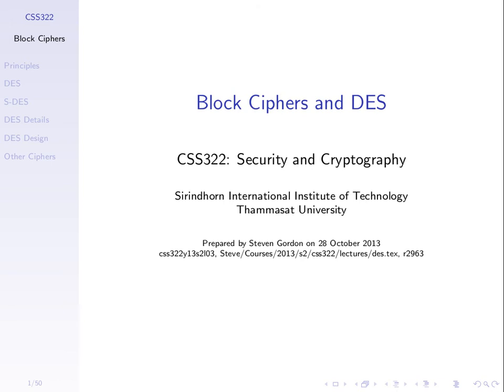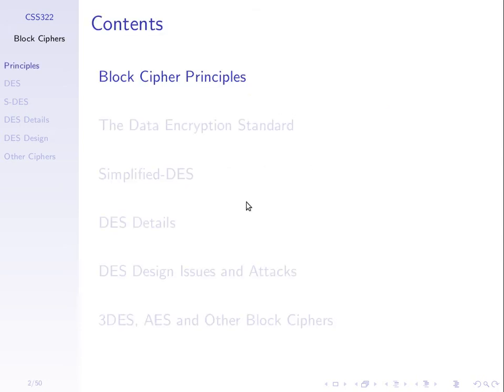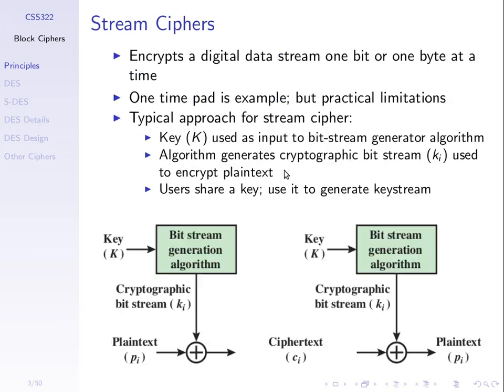We'll now look at some real ciphers, focusing on symmetric key encryption where both sides use the same key. We'll talk about what a block cipher is versus a stream cipher, and then go through in detail a particular cipher which was very popular — no longer used today but whose concepts are still applied — called DES, the Data Encryption Standard. There are two variants of symmetric key encryption ciphers: stream and block.